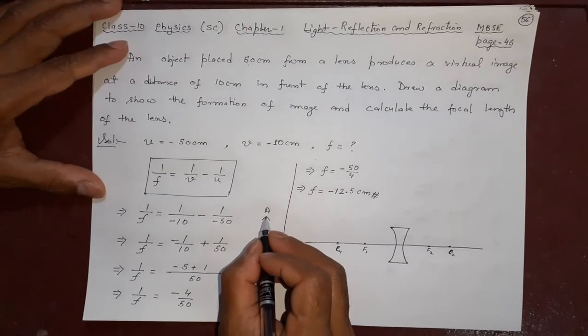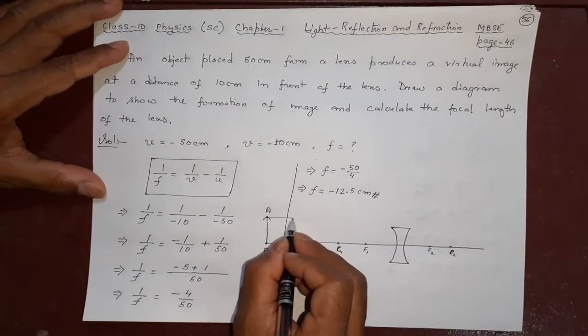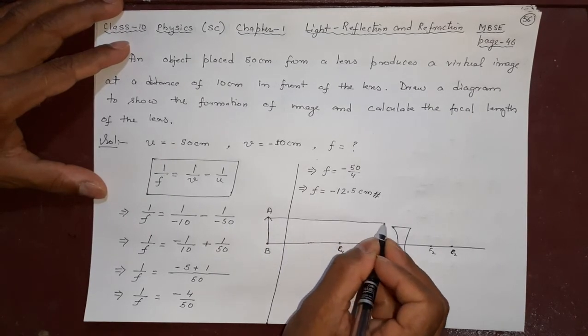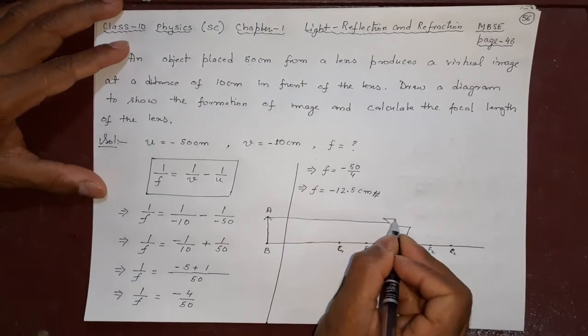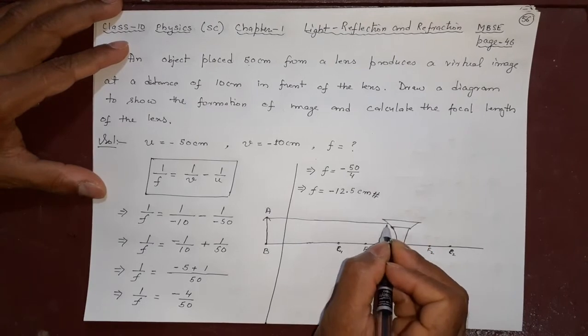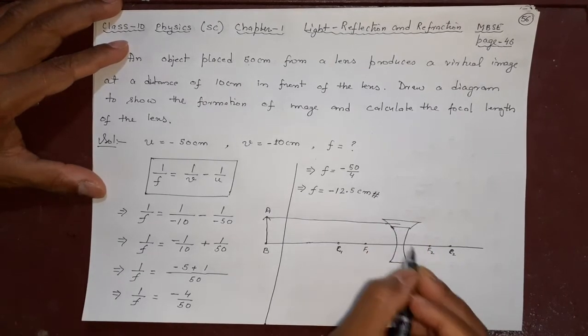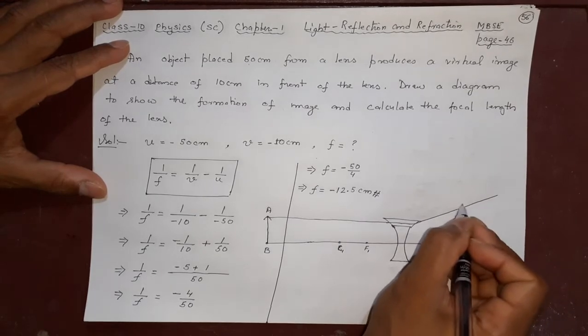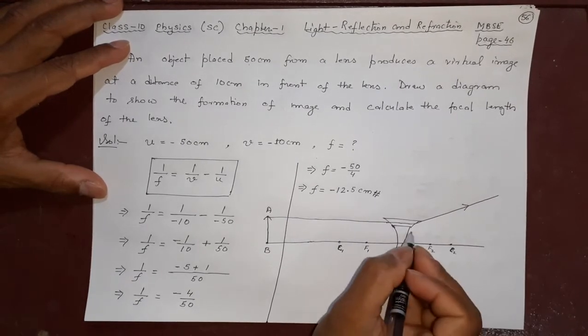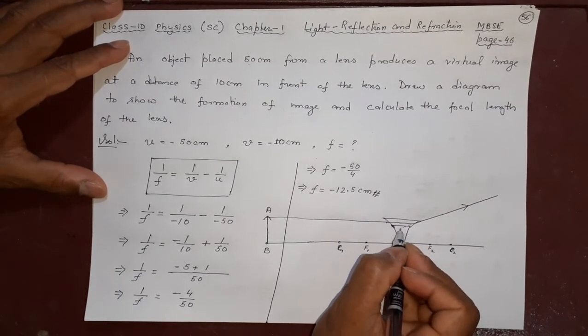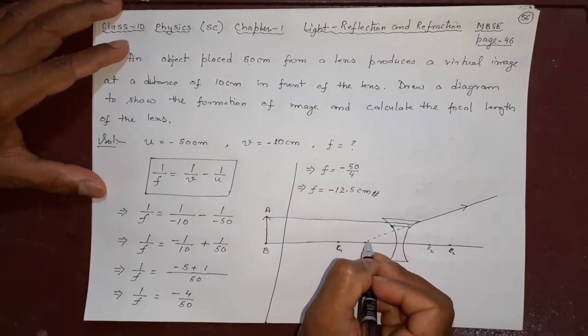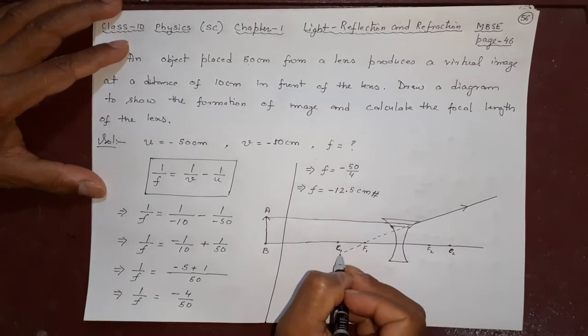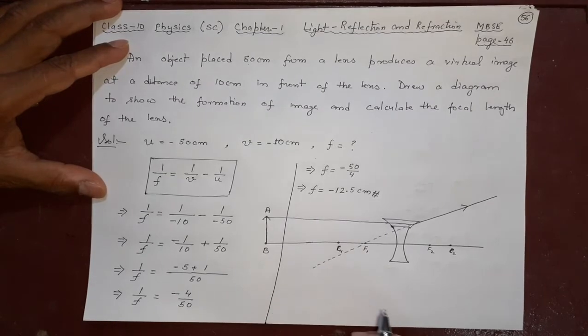The parallel light will go here. I will increase the size of the lens. Parallel light will go here and it will diverge, it will go far like this, and it will show as if it is coming out of the focus.